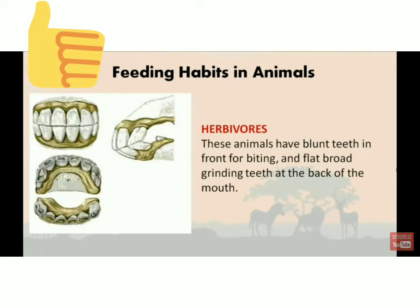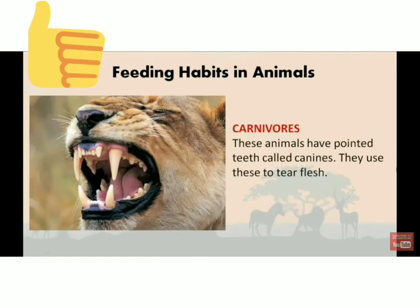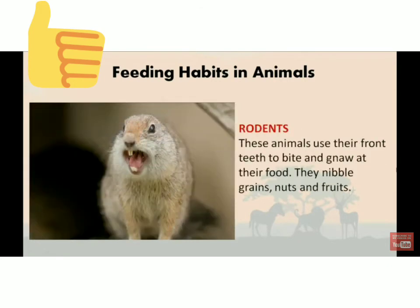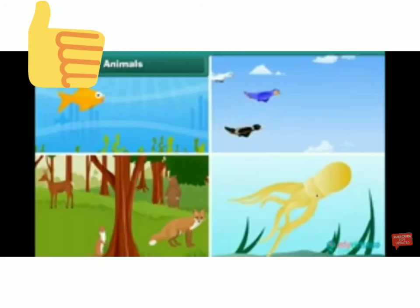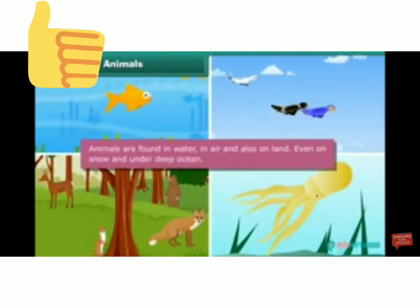Let's read the features. Herbivores have blunt teeth in front for biting and flat, broad grinding teeth at the back of the mouth to chew food. Carnivores have pointed teeth called canines, which they use to tear flesh. Rodents use their front teeth to bite and gnaw at their food — they nibble grains, nuts and fruits. Lizards and frogs use their sticky tongues to catch their prey.